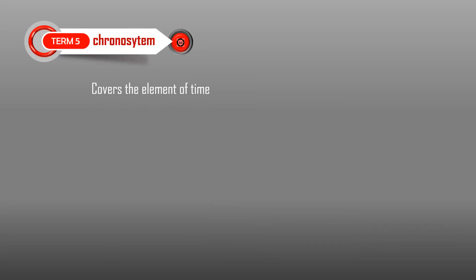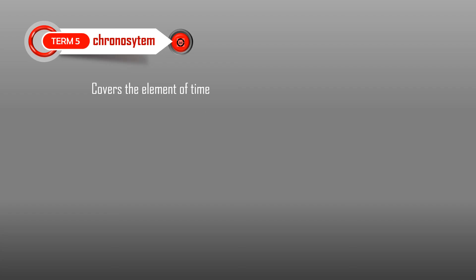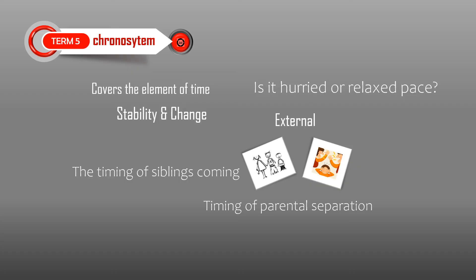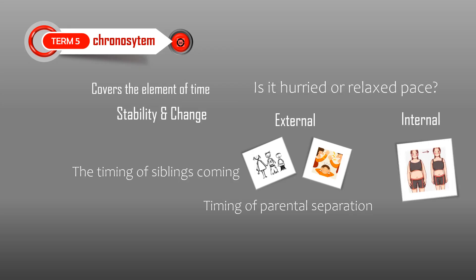The Chronosystem covers the element of time as it relates to a child's environment. This involves patterns of stability and change in the child's life — whether the child's day is characterized by an orderly, predictable pattern, or whether the child is subjected to sudden changes in routine. We can also look into the pace of the child's everyday life: is it a hurried or relaxed pace? This system can affect or influence the child externally, like the timing of other siblings coming or the timing of parental separation or even death. Effects can also be internal, like the body changes that occur within a developing child, such as the timing of menstrual onset for girls. As children get older, they may react differently to environmental changes, and may have also acquired the ability to cope and decide to what extent they will allow changes around them to affect them.